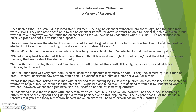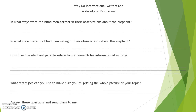So hopefully this piece helps you understand why we use a variety of resources. Now you're going to use that writing to answer these questions — wherever you took your notes, on paper, in an email, or a Word document. The questions are: In what ways were the blind men correct in their observations about the elephant? In what ways were they wrong? How does the elephant parable relate to our research and informational writing? And what strategies can you use to make sure you're getting the whole picture of your topic? Go ahead and pause this video while you answer those questions.